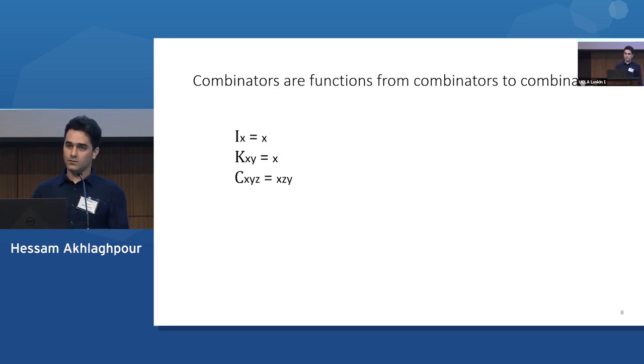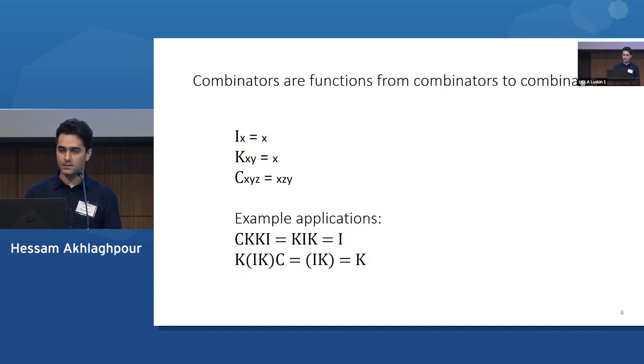And so to show you how this looks like in action, if I want to compute C, K, K, I, what I do is I go up, look here at what the rule is for C, I execute it, and I get this thing on the right, K, I, K, and to implement that I have to look at the rule for K, and then I finally get I. And here's another example with parentheses. So it's all about mindlessly executing these simple application rules.